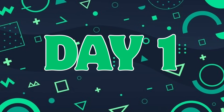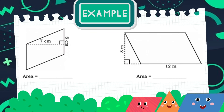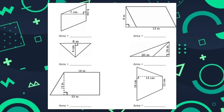So for day one, let's have our short and quick review. We have here the examples. Can you find the area of the following? So for the first activity, you're going to find the area of the following parallelograms, triangles, and trapezoids. Can you still remember the formula in finding the area of these shapes?